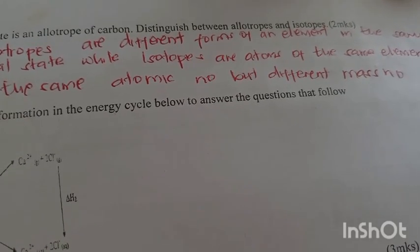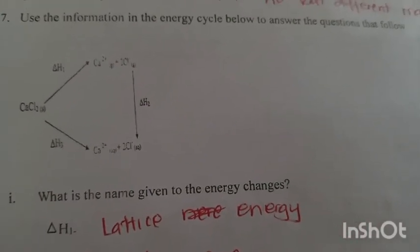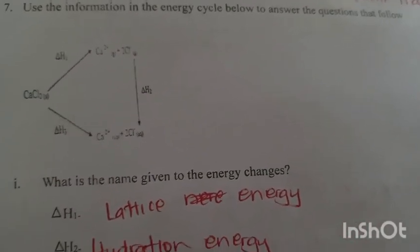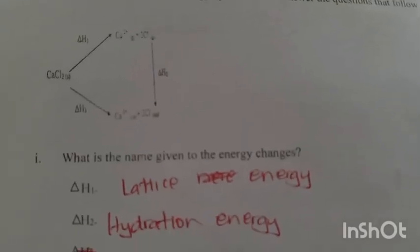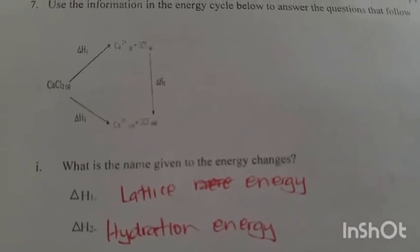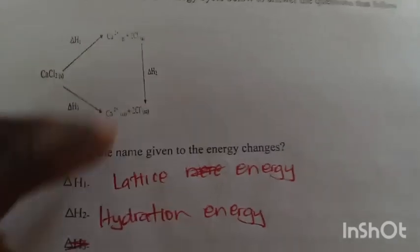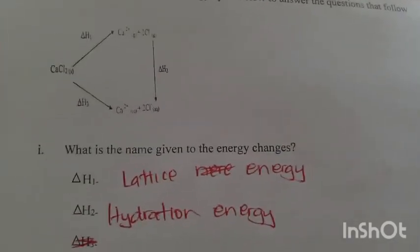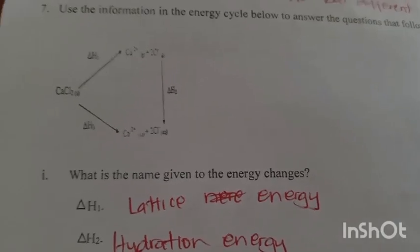Use the information in the circle diagram to answer the questions. What is the name given to the energy changes in h1 and h2? h1 is lattice energy, h2 is hydration energy.